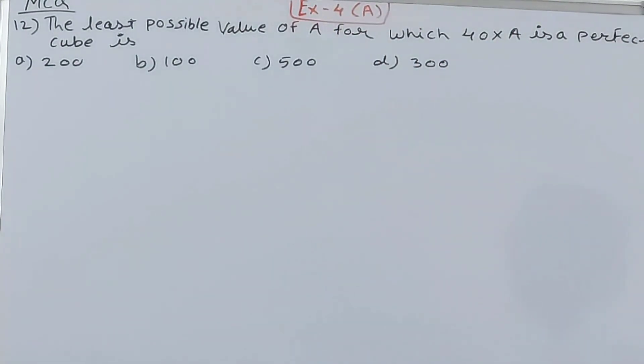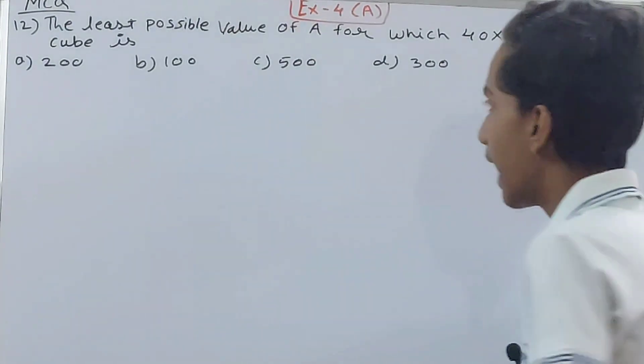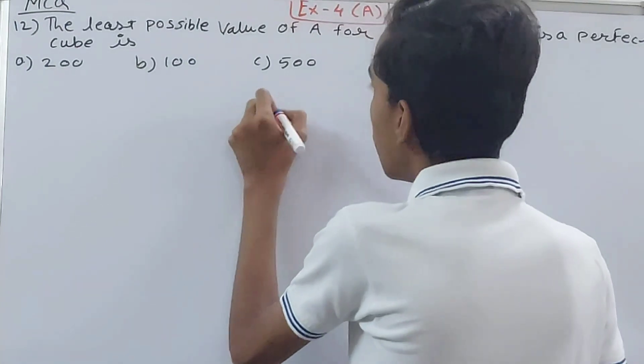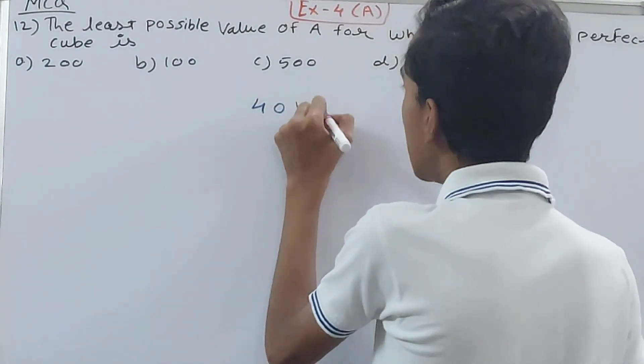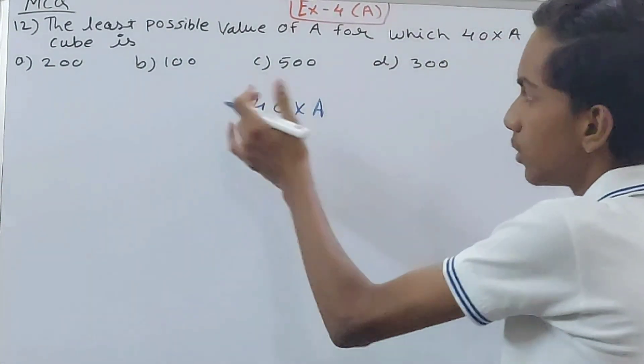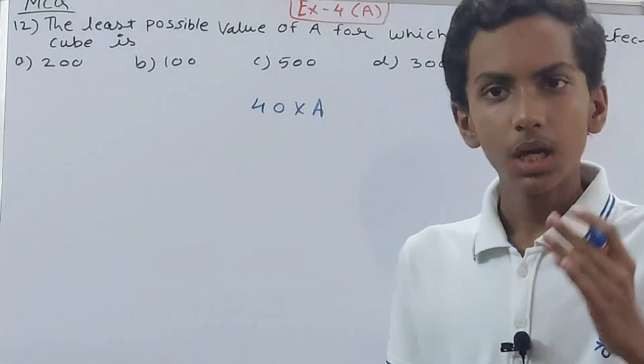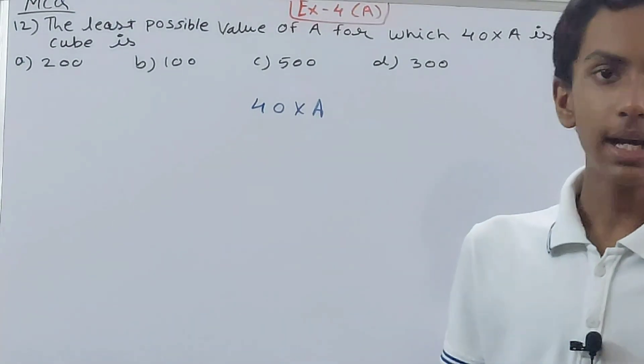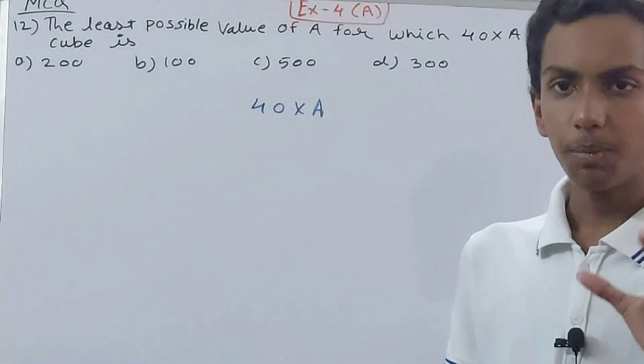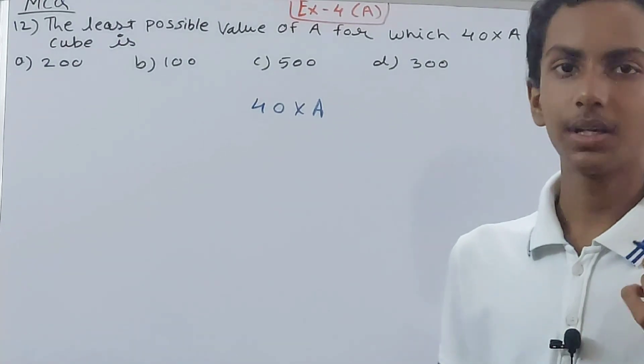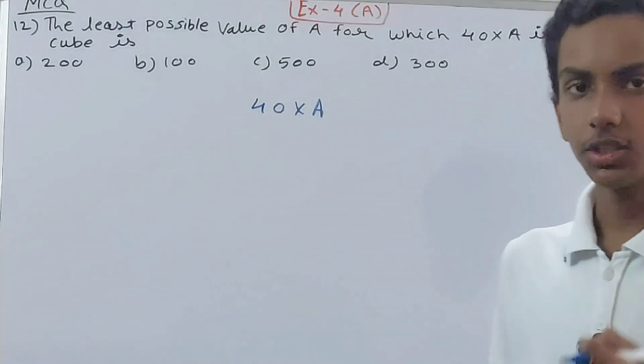So they have given us an expression 40 into A. They have given four different values, and if we put these values at the place of A, whatever product we get, if that is a perfect cube then the answer is correct.